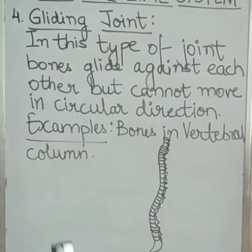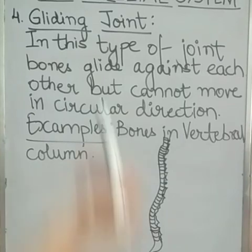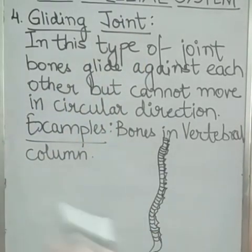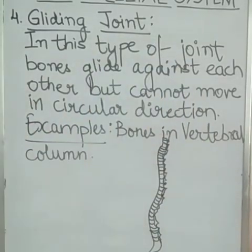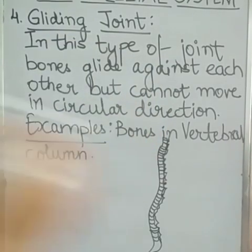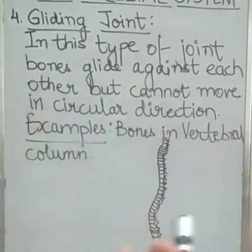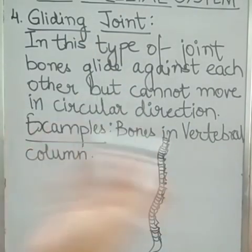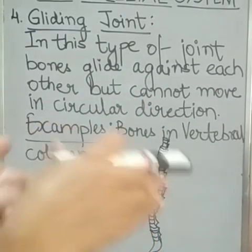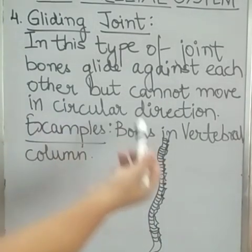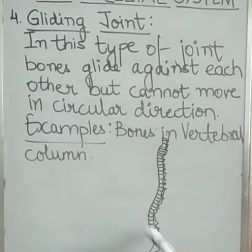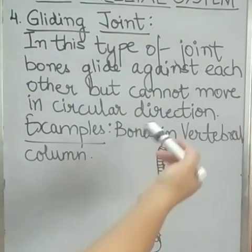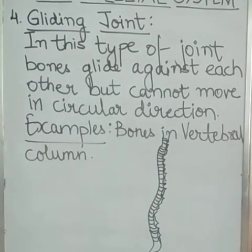The fourth type of movable joint is gliding joint. Gliding means to move smoothly or continuously. In this type of joint, bones glide against each other but cannot move in a circular direction. An example of gliding joint is the bones in the vertebral column. This is the least movable joint.